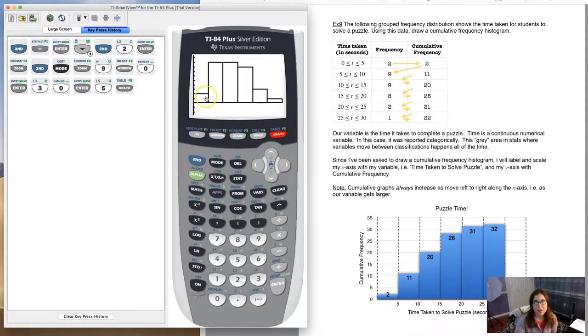Whenever you adjust the window, don't hit zoom 9. It'll just reset you to all the stuff we just had. At that point, hit graph. And that is a better looking histogram. If I trace this out, it's going to match my frequency numbers. So how many students took between 0 and 5 seconds to complete that puzzle? About 2. 5 to 10, 9, 9, 8, 3, and 1. So we're good to go there. So there's your look at creating a frequency histogram.